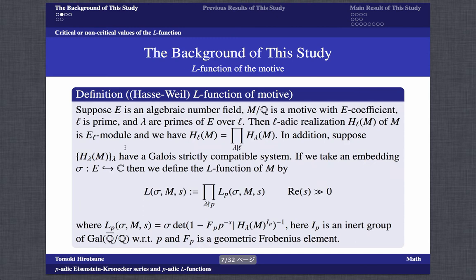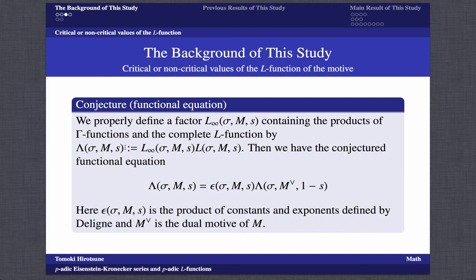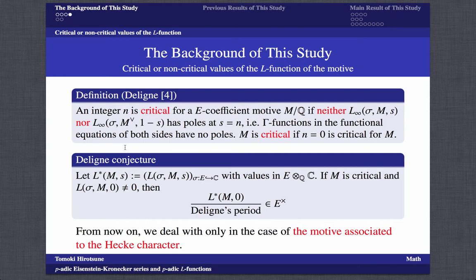We review the definition of the L-function of a motive. We define the L-function of the motive by a product formula, where L_p is called the local factor. The L-function of the motive has a conjectured functional equation. What is important is that the infinite factor L-infinity contains products of the gamma functions. Deligne defined the critical values of L-functions: critical means that the gamma functions in the functional equations of both sides have no poles. Deligne conjectured that the critical values of L-functions over Deligne's period are algebraic.